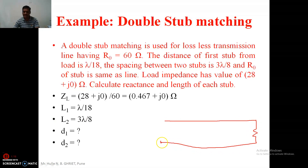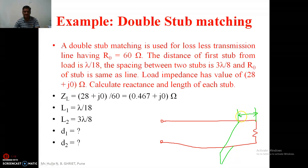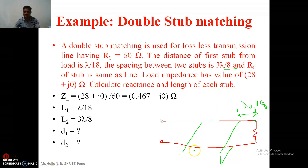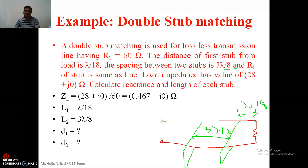In this example the transmission line is again terminated by load impedance with normalized value 0.467. Here the first stub is not located at the load but at a distance of lambda by 18. The second stub spacing from the first stub is exactly 3 lambda by 8. So stub number 1 is here and stub number 2 is separated by 3 lambda by 8. We have to follow a different procedure compared to the other examples.